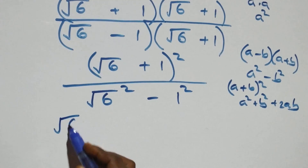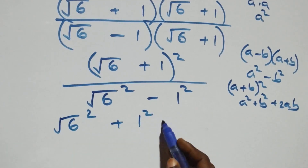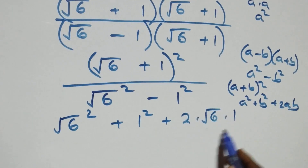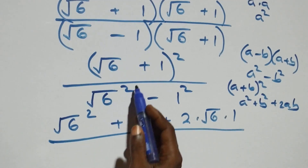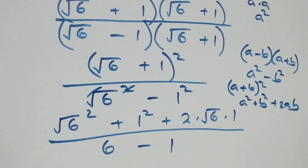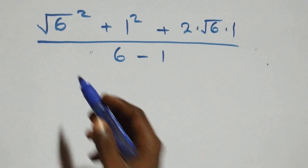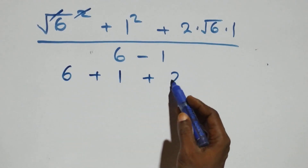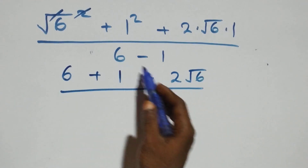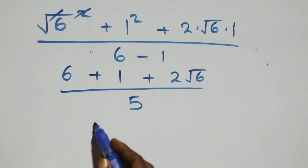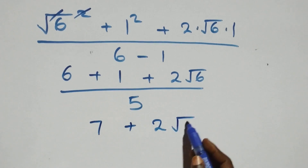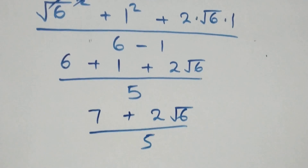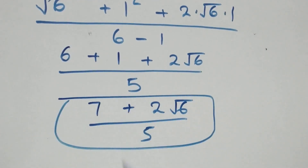So we have root six squared plus one squared plus 2 times root six times one, all over root six squared minus one squared. The square and square root cancel, giving 6 plus 1 plus 2 root six, over 6 minus 1, which is 5. That gives us 7 plus 2 root six over 5. That is the simplified form from Method 1.